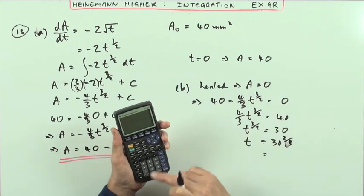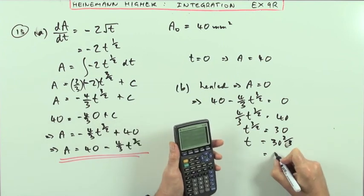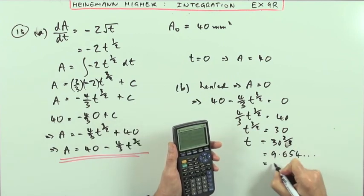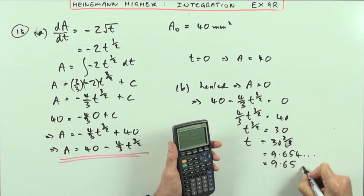But as a decimal, it gives me 9.654... So I'll just say that's 9.65 days.